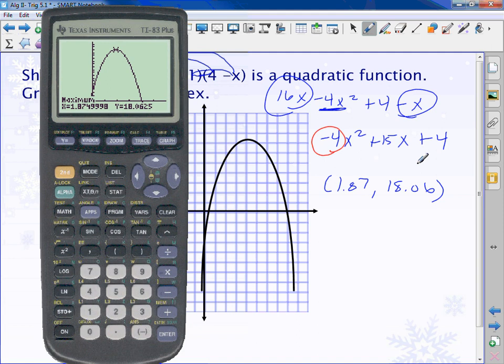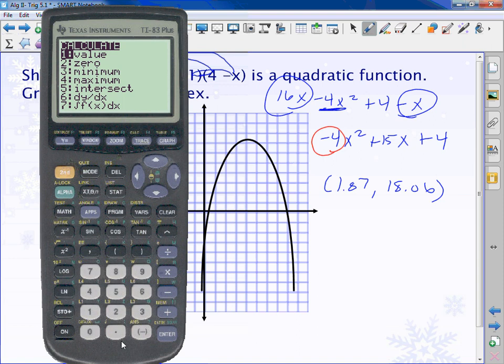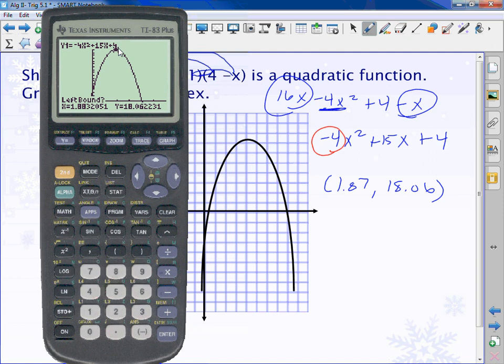Now I could have done this another way. Second, trace, maximum. You know how we just typed in 0 and 3? I know the maximum's up here. Instead of typing in 0, I just press the arrow to the left. Press enter. Press the arrow to the right of it. Press enter. I don't have to type in numbers. I can use the arrows to move left and right. Press enter again. Then it still tells me the same answer.